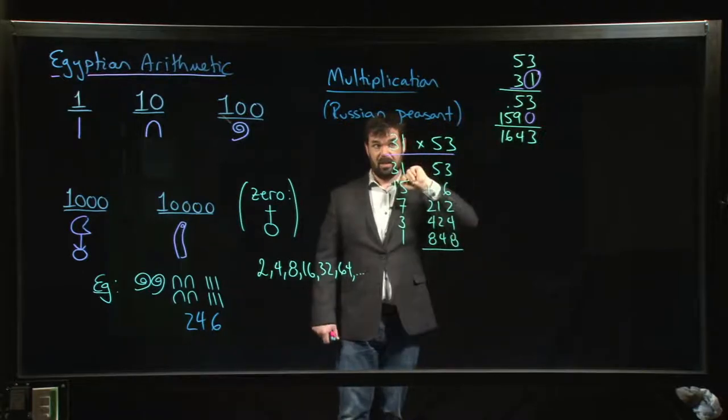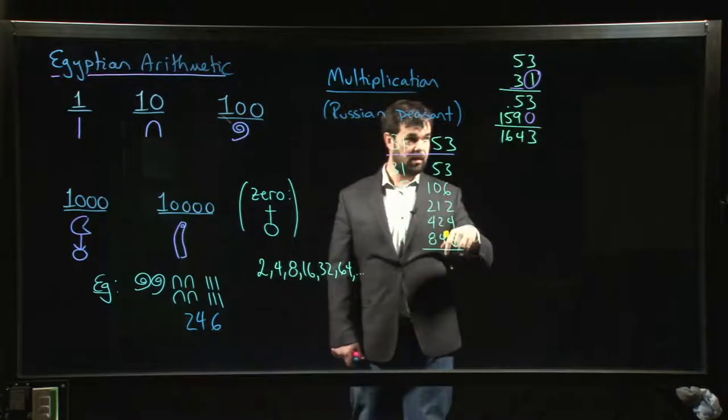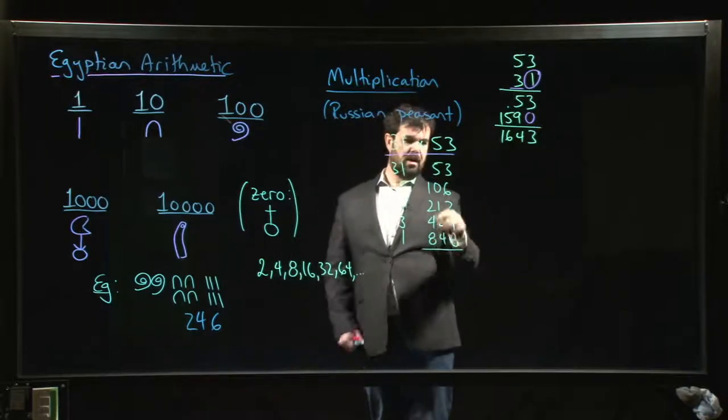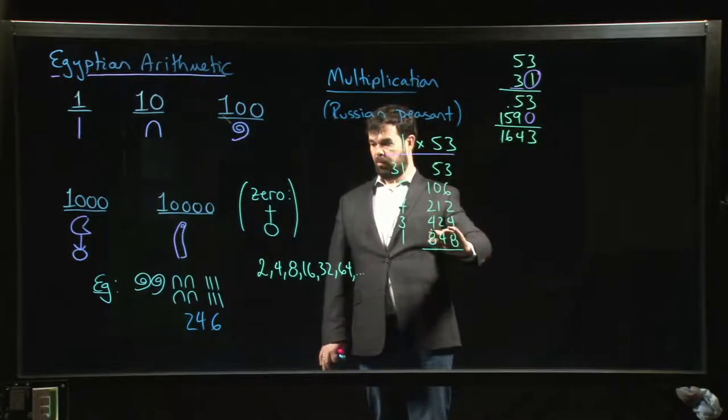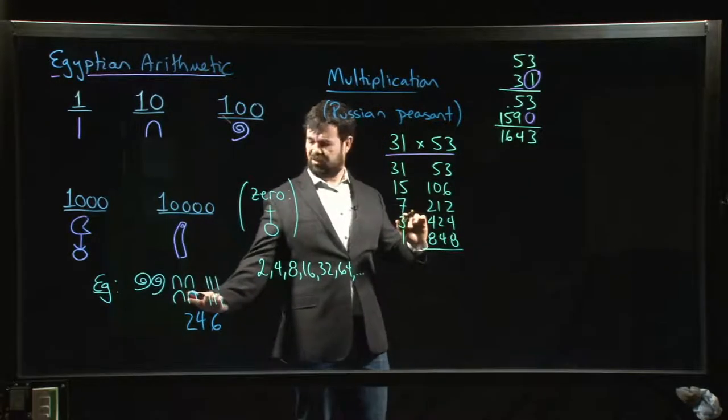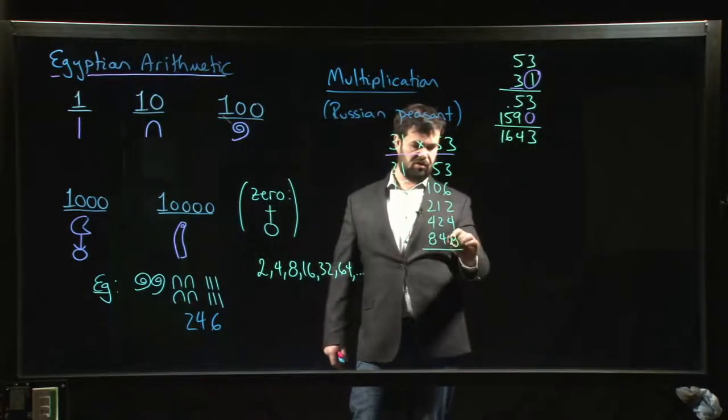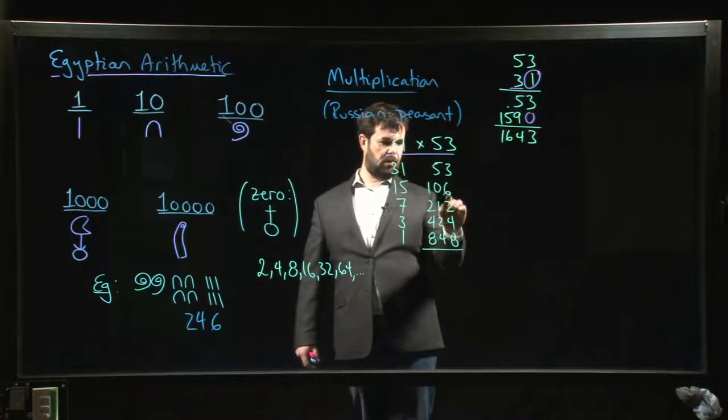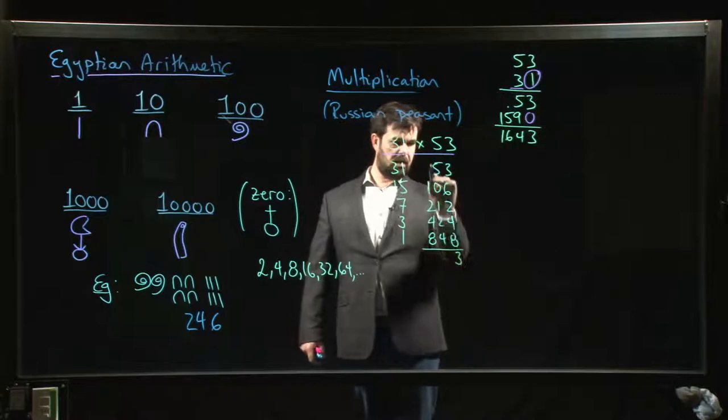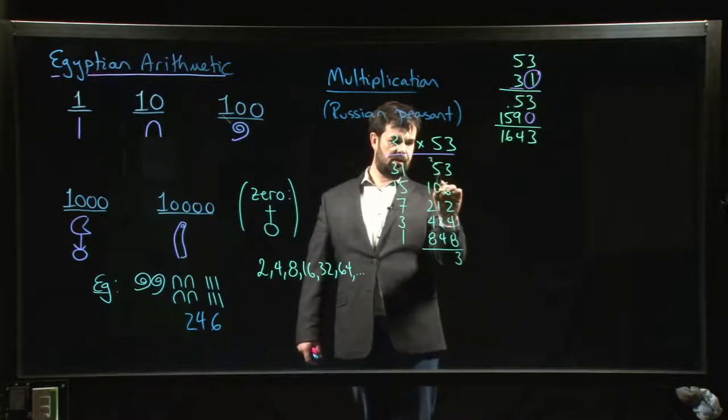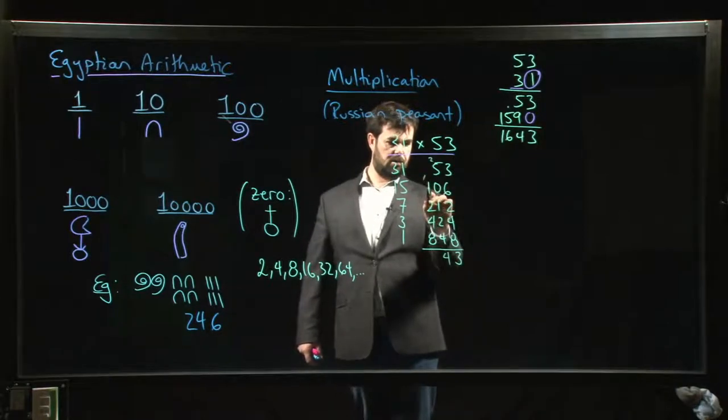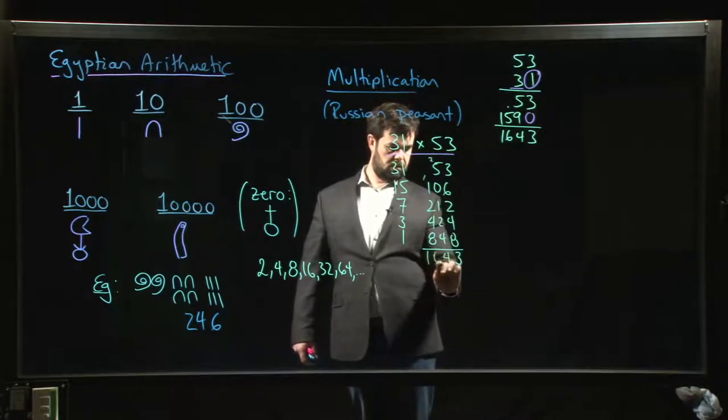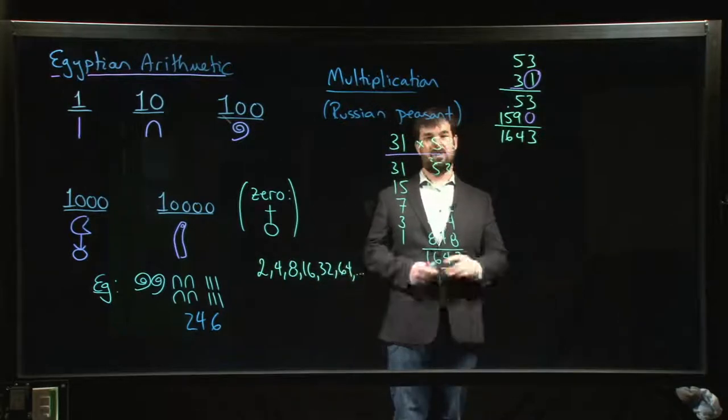It's a lot more adding than we did in the base 10 algorithm that we all learned, but same idea. If we were doing this in the Egyptian system, this adding would be maybe a little bit more straightforward because all we're doing is counting up the symbols. But we're going to use our notation. So we have 8, that's 12, that's 14, 20, 23, carry the 2, 2 plus 5 is 7, 8, 10, 14, carry the 1, 1 plus 1 is 2 plus 2 is 4 plus 4 is 8 plus 8 is 16. And you get the same result.